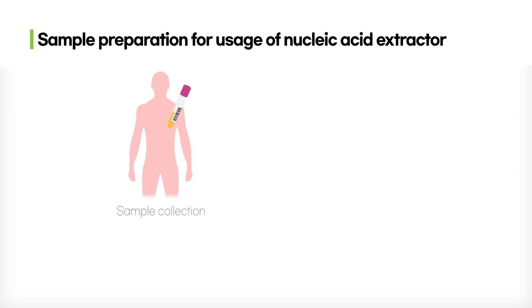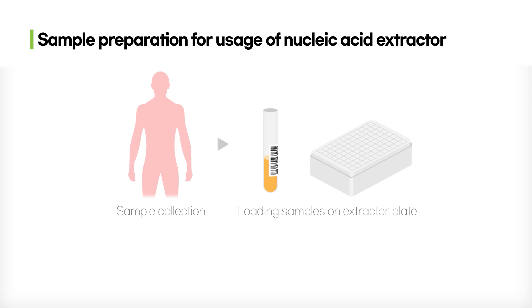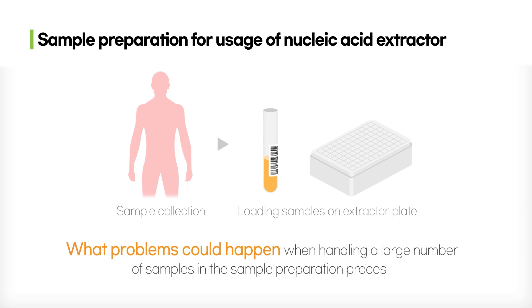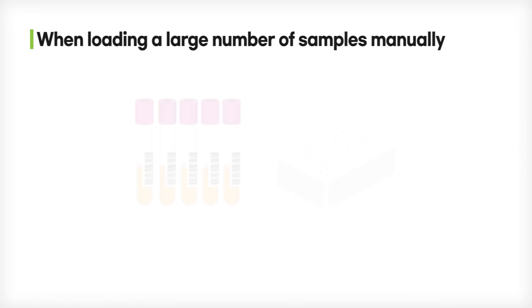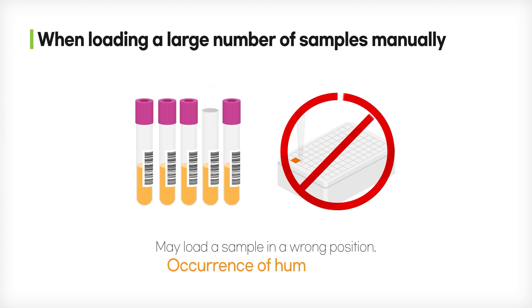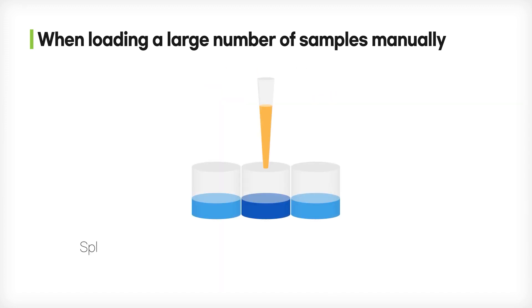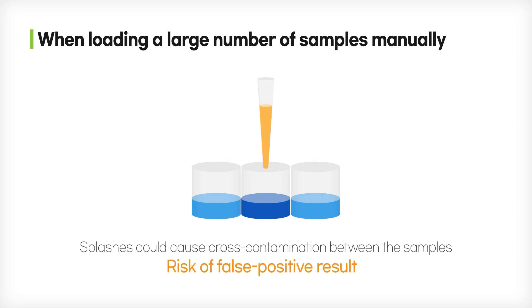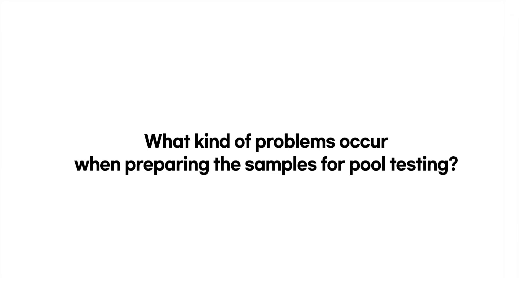Sample preparation for nucleic acid extraction is a process that collects and loads samples onto extractor plates. During the handling of large samples, problems can occur. First, during the loading of a large number of samples manually, human error could occur where samples are not loaded into the correct location. Second, loading sample splashes could cause cross-contamination and lead to false positive determinations.